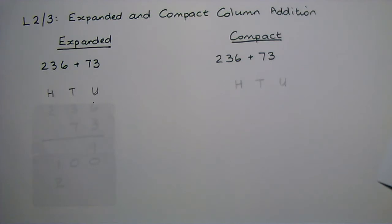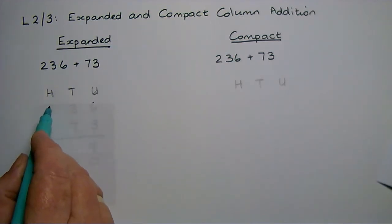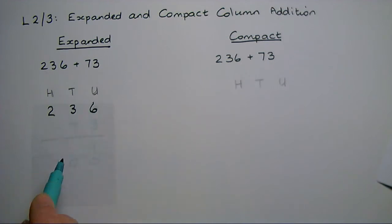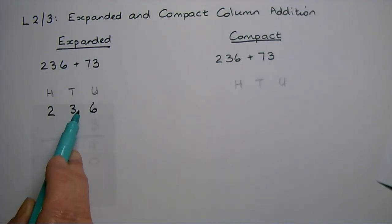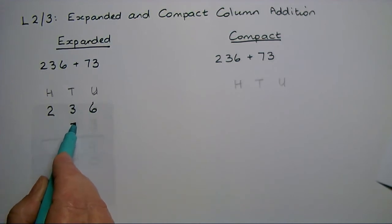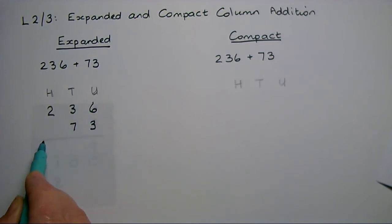I'll show you an example of each different method using the same sum: 236 add 73. I'm going to write those numbers in place value order underneath each other — 236 (2 hundreds, 3 tens, 6 units) and 73 underneath.